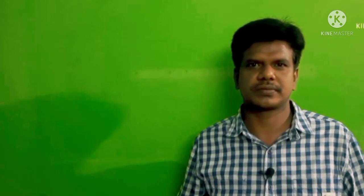Now the question is: what happens when you pass excess CO2 gas into the test tube containing calcium hydroxide? On passing CO2 gas through calcium hydroxide, the reaction is: Ca(OH)2 + CO2 → CaCO3 precipitate + H2O.